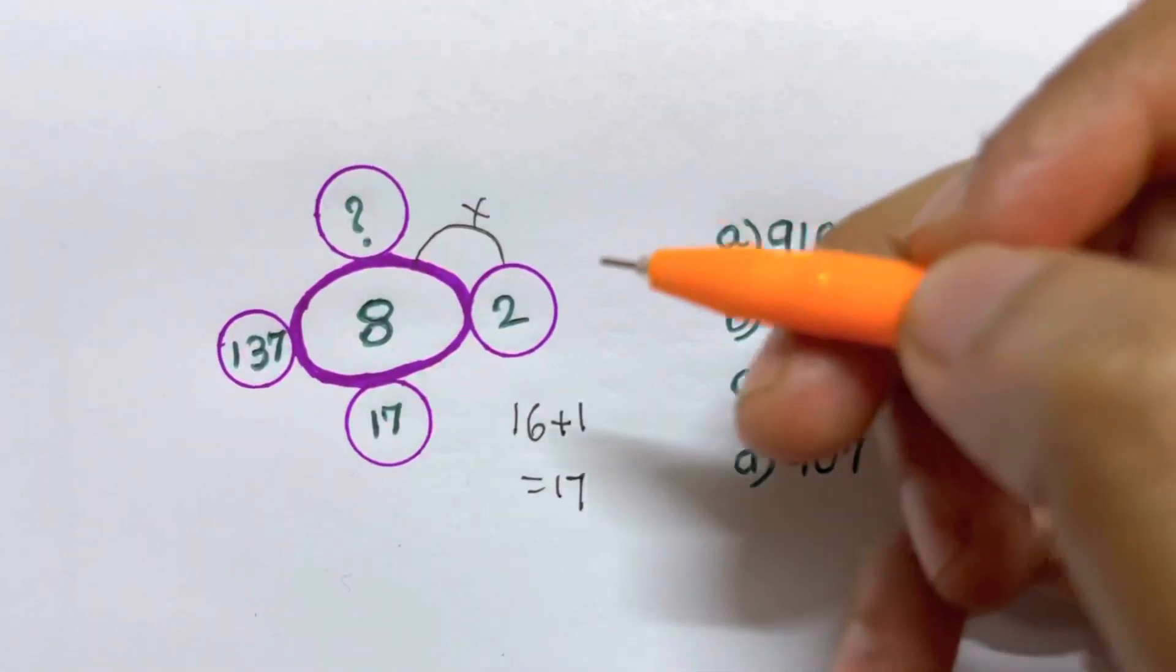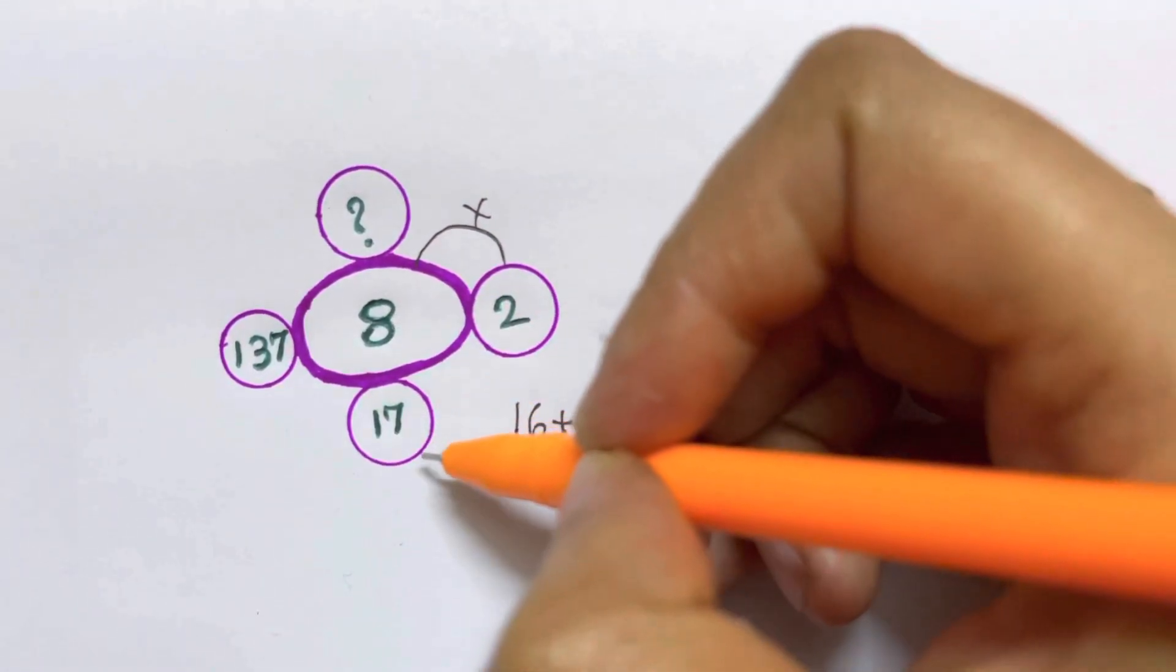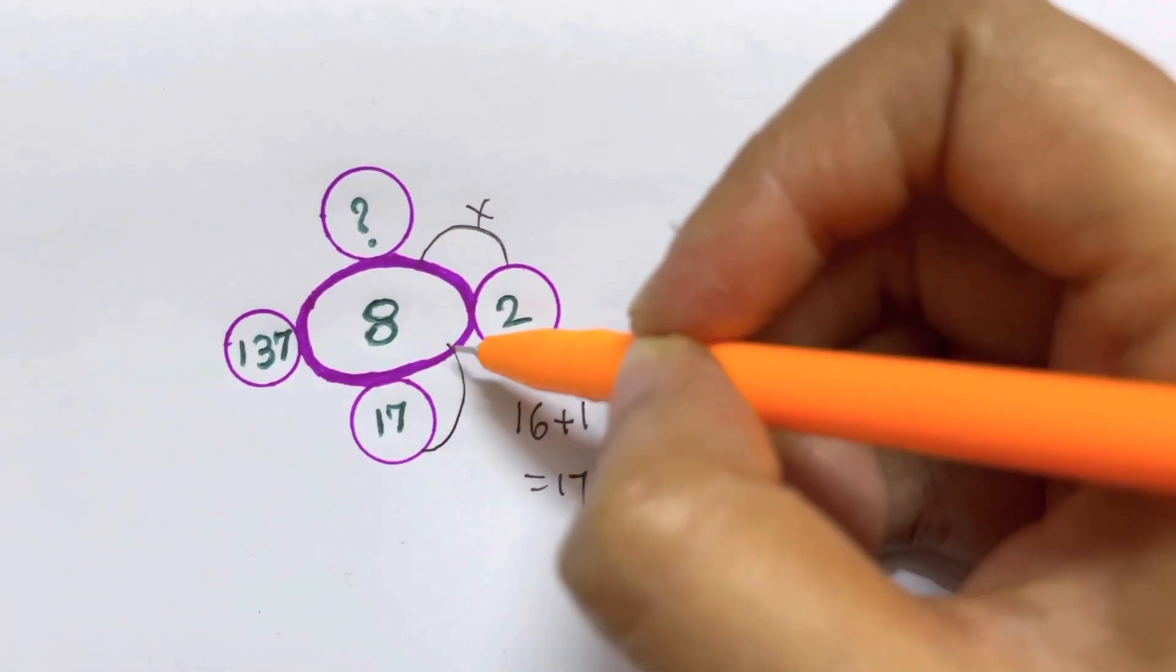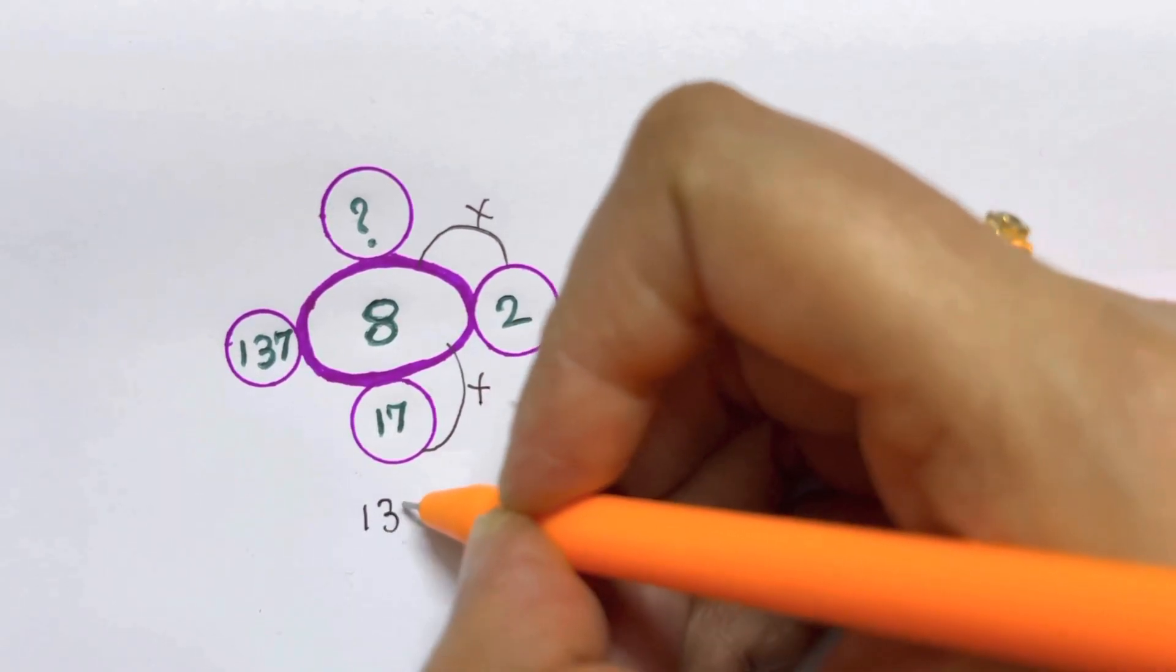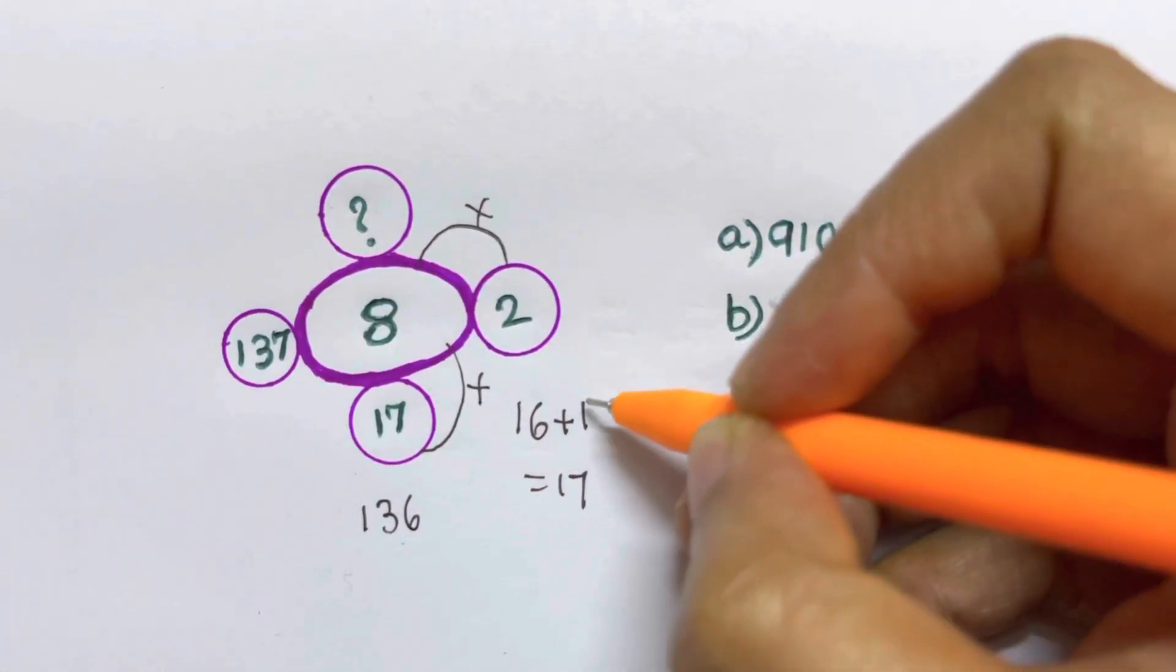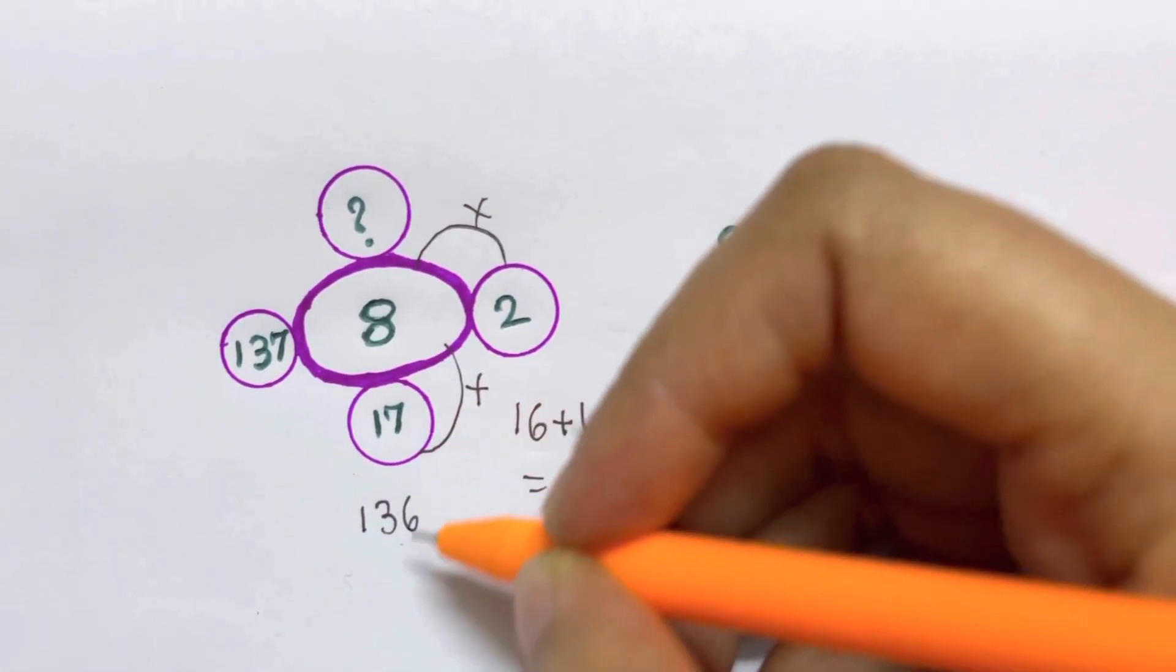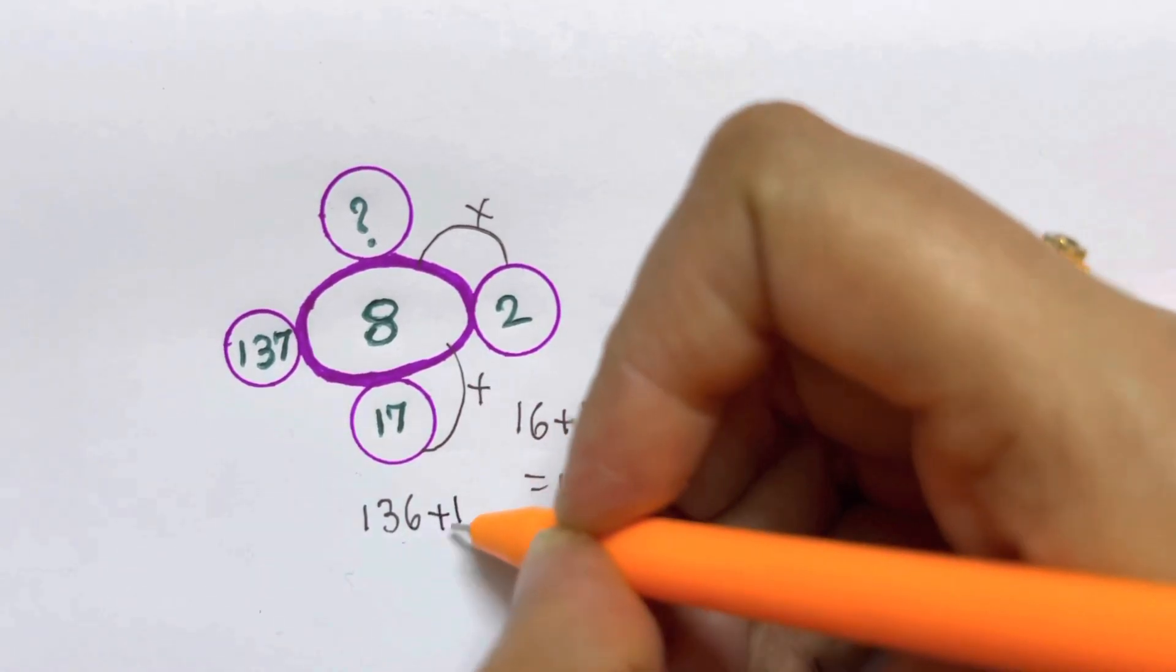Now for 17 and 8, what I'm going to do is multiply both. 17 and 8 will give me 136, and as I have added plus 1 to get 17, I'll also add plus 1 here to get 137, which is my next number.